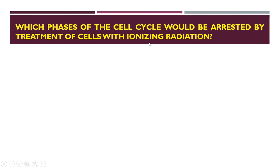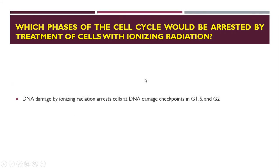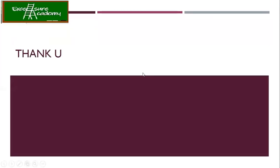Which phases of the cell cycle would be arrested by treatment with ionizing radiation? Ionizing radiation damages DNA. As discussed in previous lectures, whenever there is DNA damage at any phase of the cell cycle, cells get arrested at that particular phase so they can repair the damage. For example, if the cell was in G1 at the time of damage, it will be arrested in G1. The cell arrests so that repair can occur.